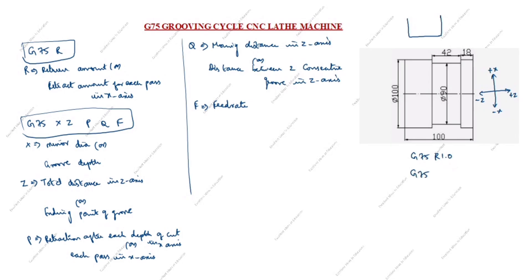Next code: G75 X. X is the minor diameter. You can see in the drawing — 90 is the minor diameter. So X is 90. Next is Z — the total distance in the Z axis. 18 plus 40 equals 60, so Z is minus 60 because Z goes in the minus direction.